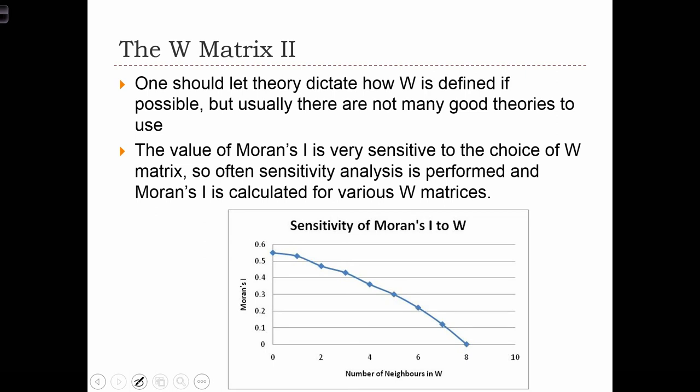All of those cases are easily understood in terms of how we embody the spatial pattern, but they don't necessarily provide any real strong rationale for, say, why rook should be used and not queen. But at least we know very clearly what is inside the W matrix.